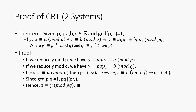So what kind of math class would this be without a proof? Here we're just going to take the case of two systems, but you can easily extend it farther with induction or whatever tool you want. So this is the theorem given constants p, q, a, b, and x in the integers such that the greatest common divisor of p and q is 1. There exists a unique y — where the exclamation point after the existential quantifier represents uniqueness — such that x is equivalent to a mod p and x is equivalent to b mod q, and that implies y is congruent to a·q·q1 plus b·p·p1, where p1 is the inverse mod q, and q1 is the inverse mod p.